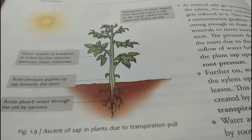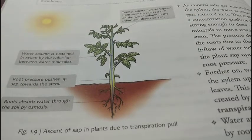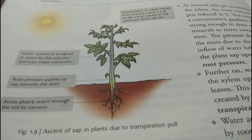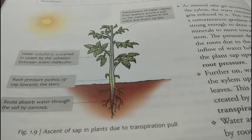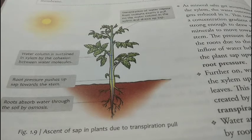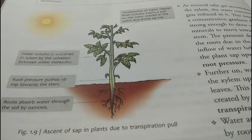Water and minerals absorbed by roots are conducted upwards through the xylem to other plant parts such as the stem, leaves, and flowers. This upward movement of the cell sap, which contains water and minerals, is called the ascent of sap.